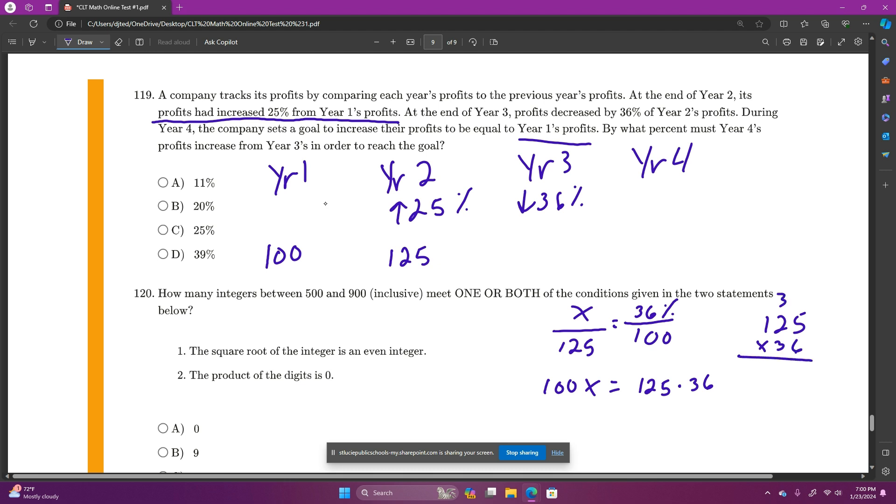6 times 5 is 30, 6 times 2 is 12 plus 3, 15. 6 times 1, 6 plus 1, 7. 3 times 5, 15. 3 times 2, 6 plus 1, 7. 3 times 1, 3. And we're going to have to divide that by 100. So it's 45. So it's going down 45. So 125 minus 45, make that 12 minus 4 is 8. So they're down to 80.